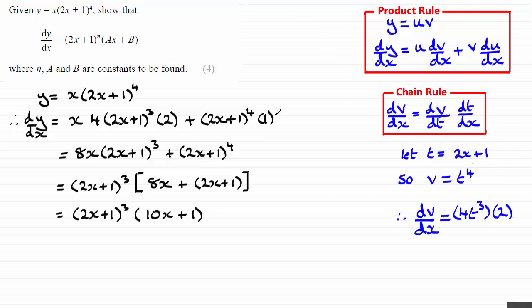And you can see it takes on the form that we've got here. So, I'd now compare it to that. And by comparing it, I can see that n equals 3, a equals 10 and b equals 1.